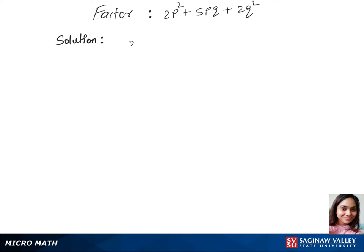Let's factorize this trinomial. We'll first find factors for 2p² so we have 2p times p, and for 2q² we have 2q times q.